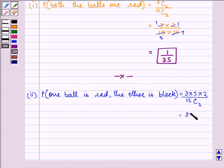So this is equal to 3 into 5 into 2 divided by 15 into 14. That gives us the answer to the second part as 1 by 7. So the probability that we will pick out one ball that is red and the other is black is 1 by 7. This completes the second part.